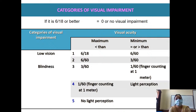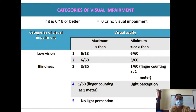Grades 1 and 2 are termed low vision. By definition, less than 3/60 is blindness - categories 3, 4, and 5 - which include finger counting at 1 meter, light perception, and no light perception. All these last three categories fall into the blindness category.